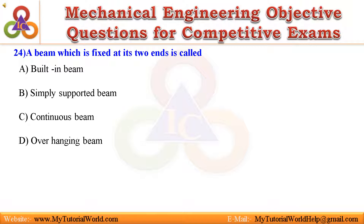Question 24. A beam which is fixed at its two ends is called. A. Built-in beam. B. Simply supported beam. C. Continuous beam. D. Overhanging beam. Answer is: Built-in beam.